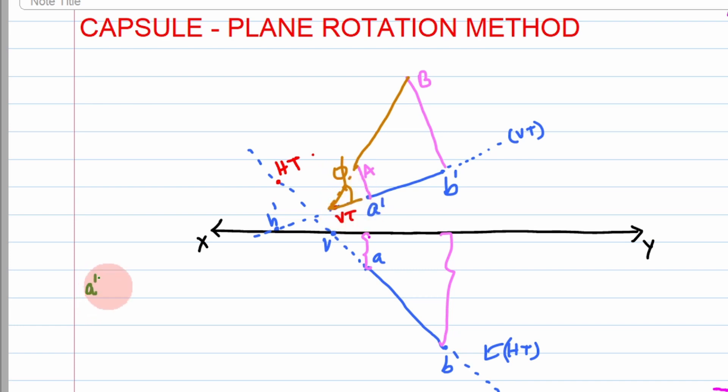So here, a dash b dash and AB meet at VT to give you phi, and a b and the true length AB meet at HT to give theta.